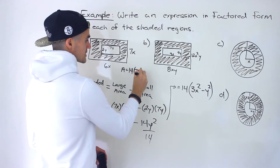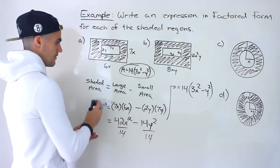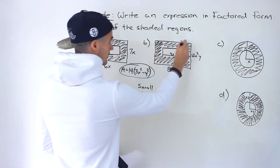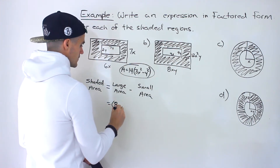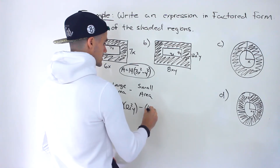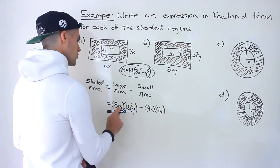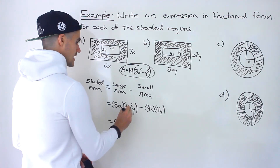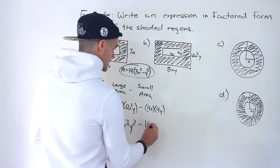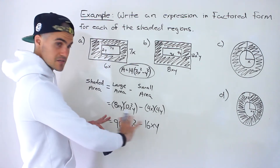That is the factored expression for the shaded area of part A. Now for part B, the large rectangle has dimensions involving 8xy, so there are more variables to work with. The large area is 8xy times 12xy, and the small area is 4x times 4y. Expanding: 8 × 12 = 96, x · x² = x³, y · y = y², giving 96x³y²; and 4x · 4y = 16xy. So the expanded expression is 96x³y² − 16xy.